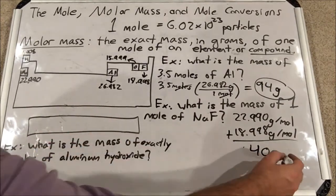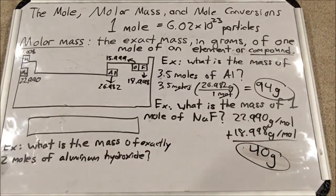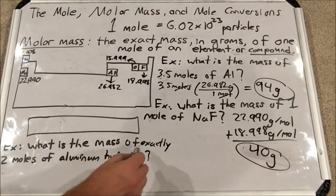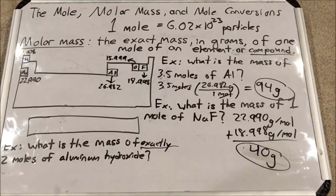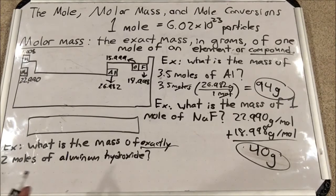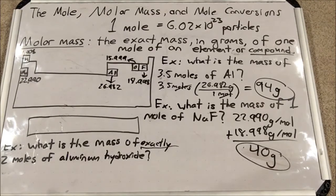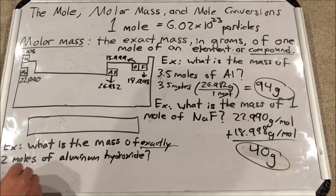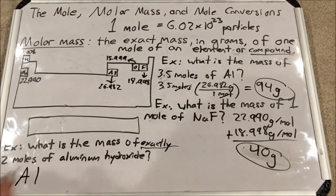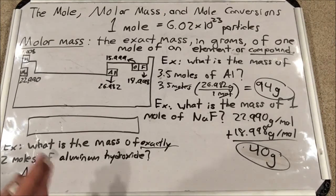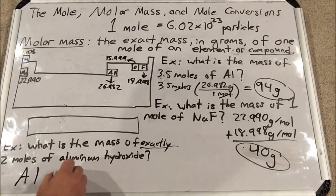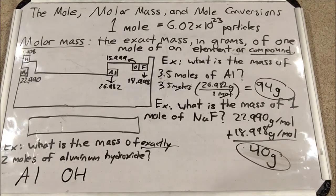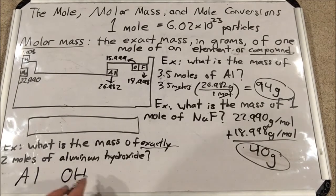Another example: what is the mass of exactly two moles of aluminum hydroxide? I need to know what aluminum hydroxide is. Aluminum is Al, and hydroxide — which you should be memorizing — is OH, a polyatomic ion. You need to know the charges: hydroxide has a charge of minus one, and aluminum is in group 3A, so it has a charge of 3 plus in ionic form.